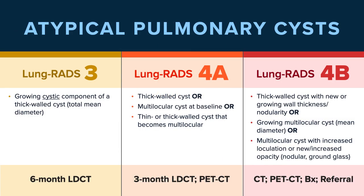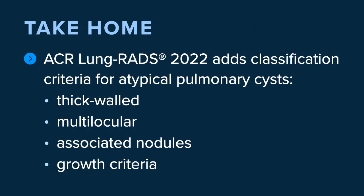In summary, we've reviewed atypical pulmonary cysts, provided definitions that guide the classification and management of these lesions, and seen examples of Lung RADS 3, 4A, and 4B atypical pulmonary cysts. The take-home point is that atypical pulmonary cysts may represent primary lung cancer and they warrant follow-up at screening. Lung RADS 2022 adds classification and management criteria for atypical pulmonary cysts that are thick-walled, multilocular, have associated nodules, or demonstrate growth over time. These evidence-based criteria help clarify how to manage cystic lesions at lung cancer screening and add to the strength of Lung RADS in identifying potential malignancy.